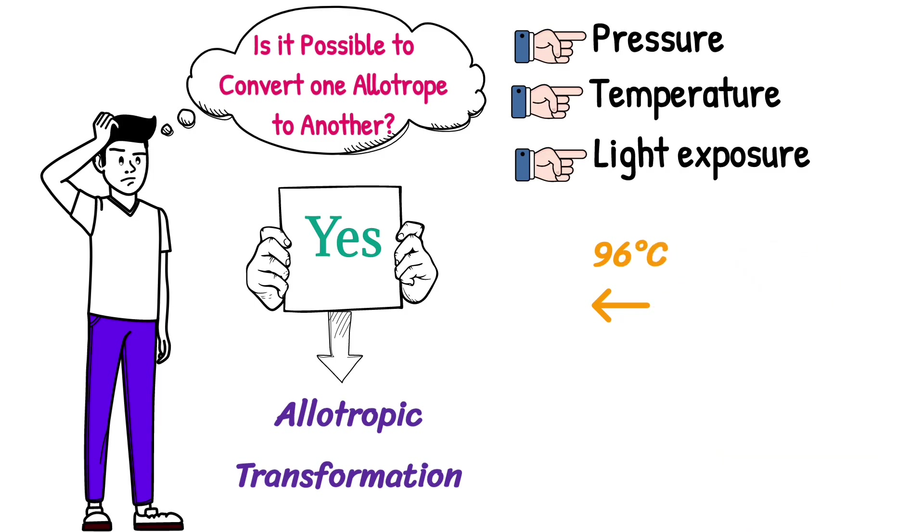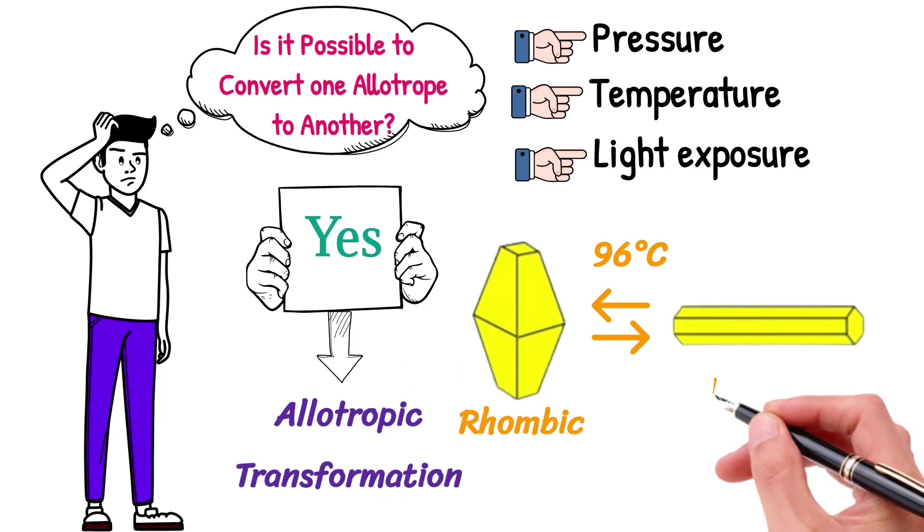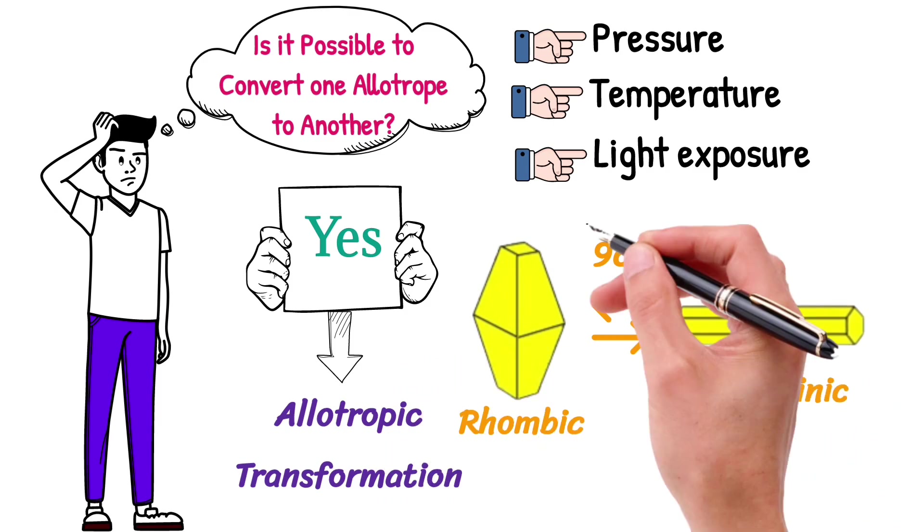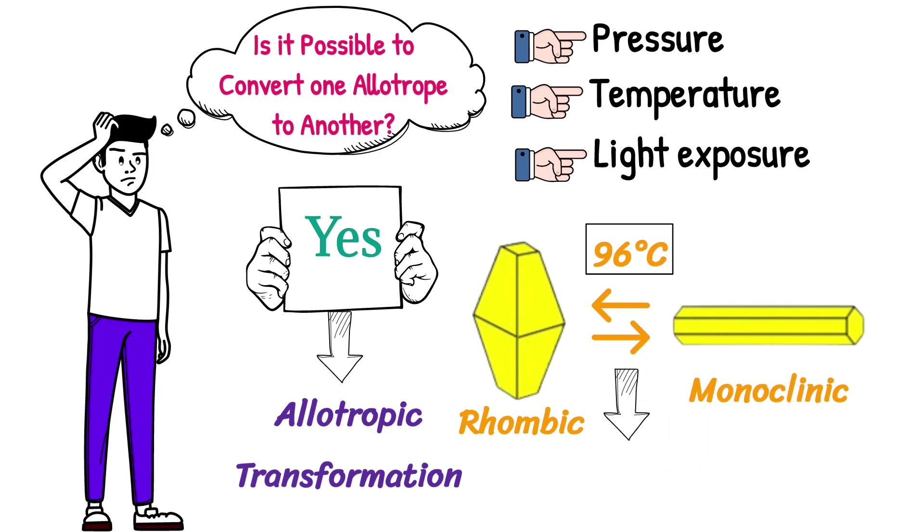For example, below 96 degrees Celsius, rhombic form is stable. If rhombic form is heated above 96 degrees Celsius, its molecules rearrange themselves to give monoclinic form. This temperature is known as transition temperature.